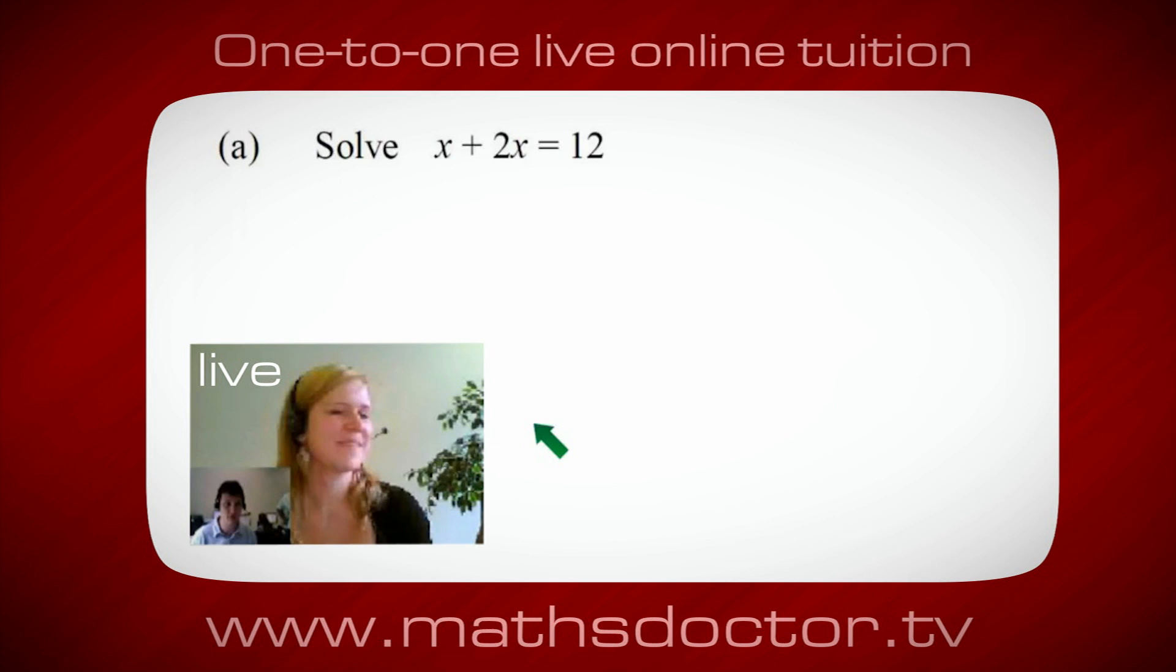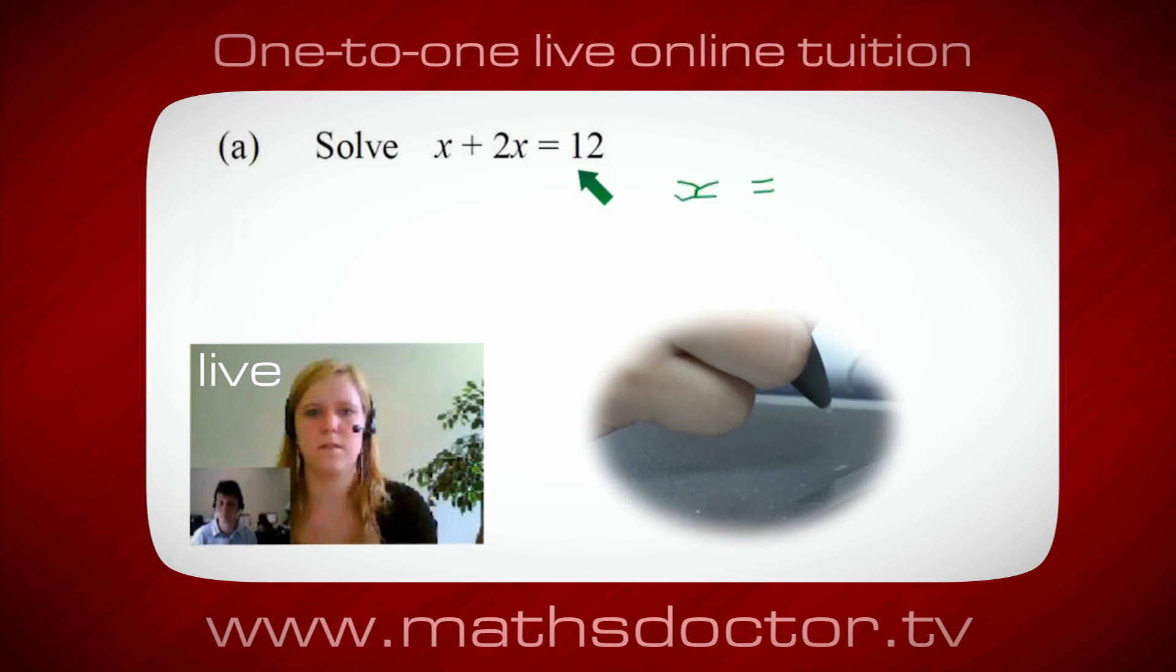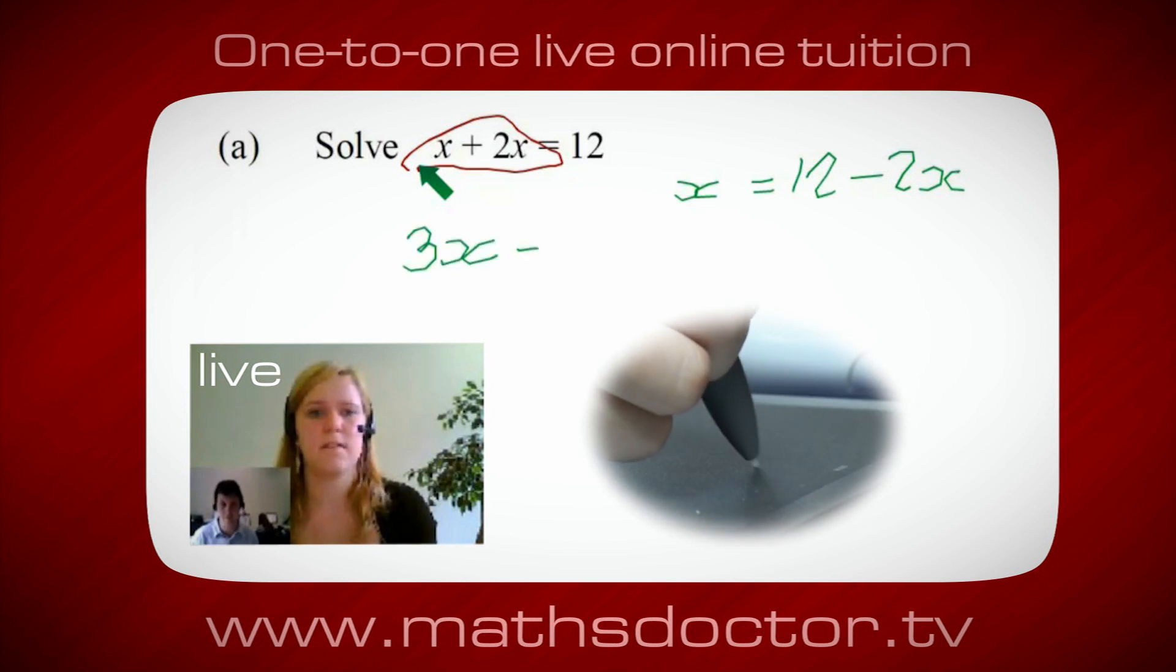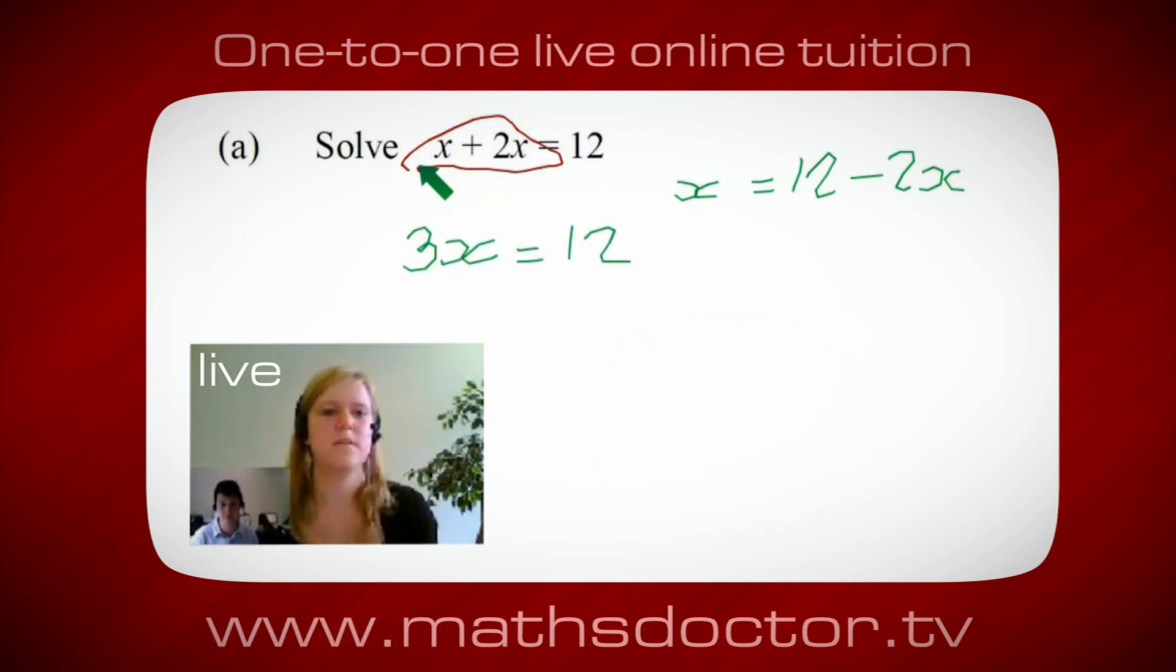Okay, so let's have a look at this one. Solve x plus 2x equals 12. So what do you think you do first? Okay, well I want x on its own, so I would put x equals 12 minus 2x. Okay, so a lot of the time we want to get x by itself, but what we want to do first is get all of these x's together. So can you see anything we can do with this? Get all these together in one place. Oh okay, it's 3x, isn't it? Yeah, absolutely. So 3x equals 12. Oh, and so x equals 4. Brilliant. Spot on. Well done.